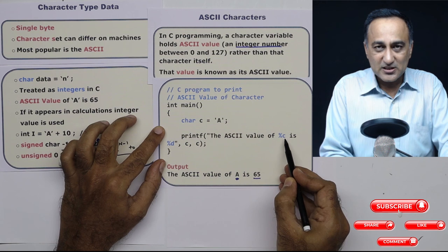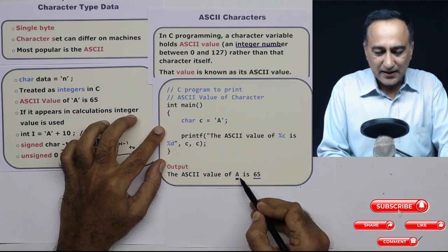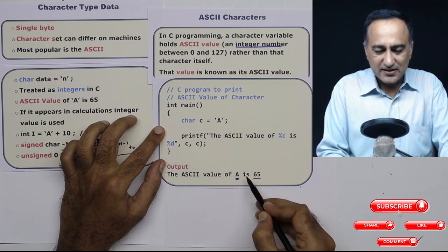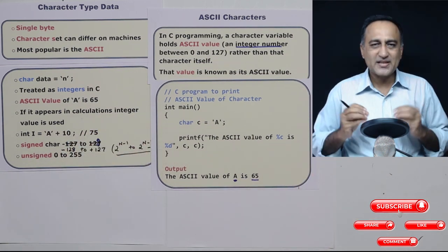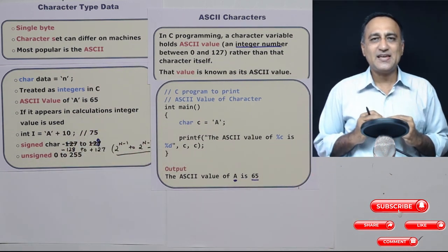Now when I do percentage D, its ASCII value as 65 is going to be printed. So I hope this clarifies your understanding of ASCII characters.